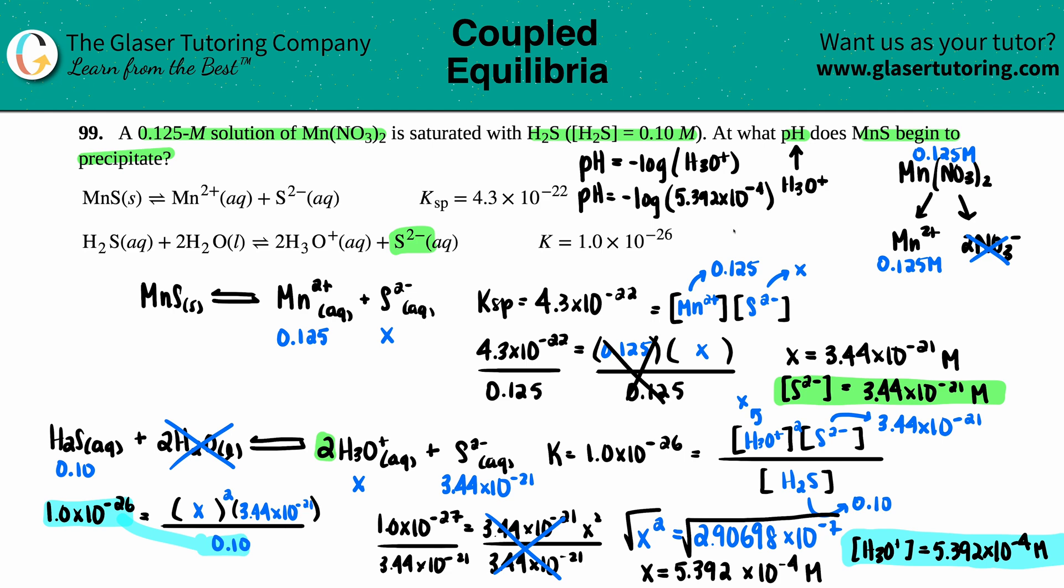Negative log of 5.392 times 10 to the negative fourth. And maybe I will put my answer right over here. pH equals negative log 5.392 times 10 to the negative fourth. I get 3.27. And I have three sig figs. So technically, actually here I have two sig figs. So I need two after the decimal. So 3.27.